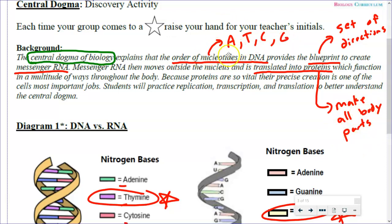So the order of these letters is what builds all of our body parts. That's the central dogma of biology. And this is true for all living things — all living things use these same letters and the same process to build the body parts. Now the letters for humans are in a different order than for a tree. That's why we look different. The order of the letters will tell us what to build.